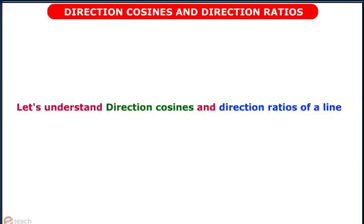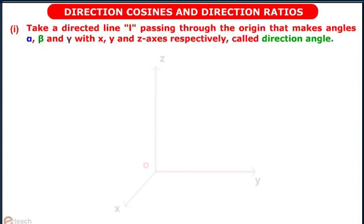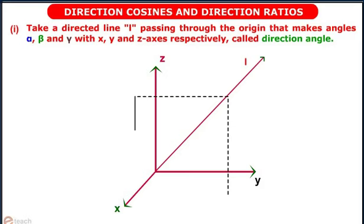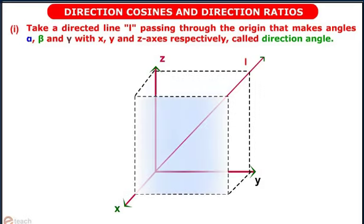Direction cosines and direction ratios of a line. Take a directed line L passing through the origin that makes angles alpha, beta, and gamma with the x, y, and z axes respectively. These are called direction angles.